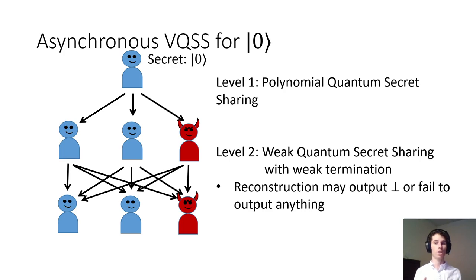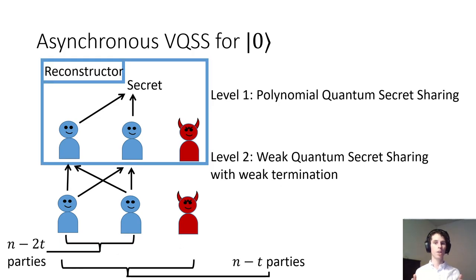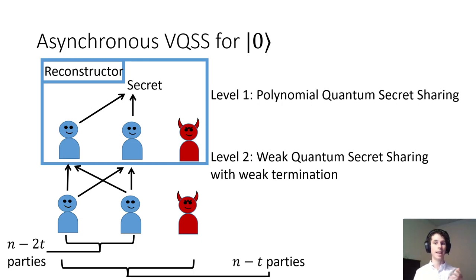First, the dealer splits a zero state using standard quantum polynomial secret sharing, and they send the shares to each party. Then each party shares their level-1 shares again using weak quantum secret sharing with weak termination. When we later try to reconstruct the level-1 shares, any level-1 shares belonging to corrupted parties might have their reconstruction hang forever. Third, the parties test their shares by performing some measurements and sending the results to a classical trusted third party. If the shares all pass the test, then they are all valid shares of a zero state, and sharing terminates as soon as n-t parties have valid shares. To reconstruct, the parties do the reconstruction phase for the weak quantum secret sharing scheme in order to help the reconstructor reconstruct the level-1 shares. As soon as the reconstructor has at least n-2t level-1 shares, it can recombine them to get the secret.